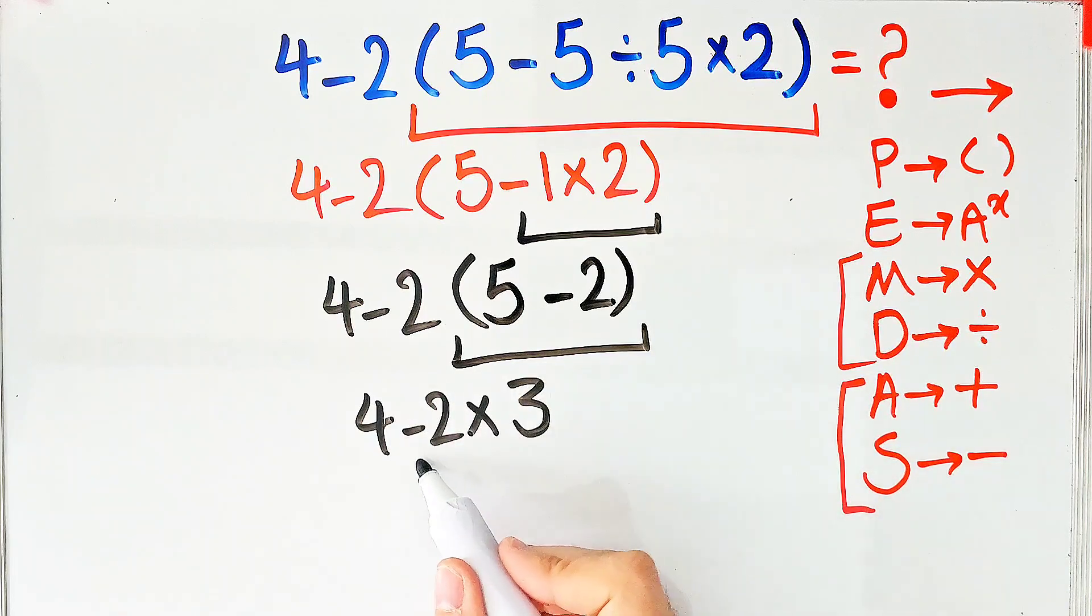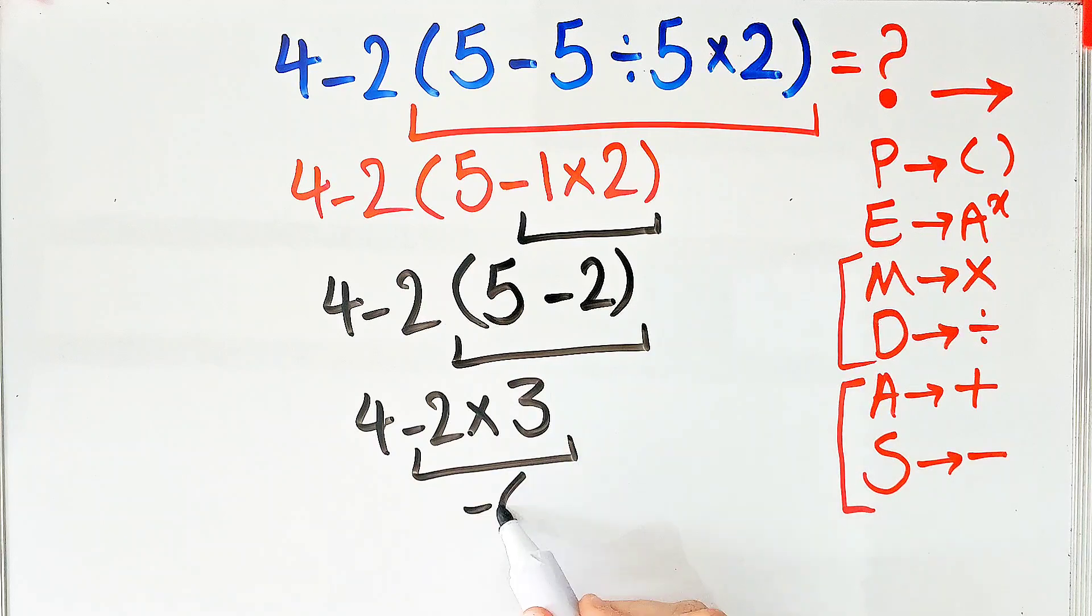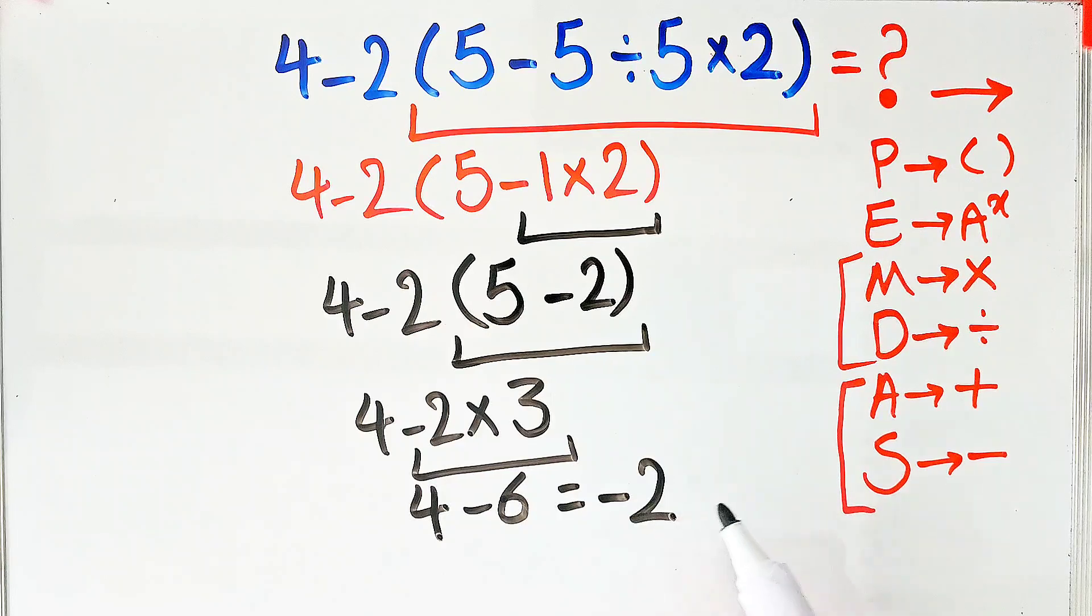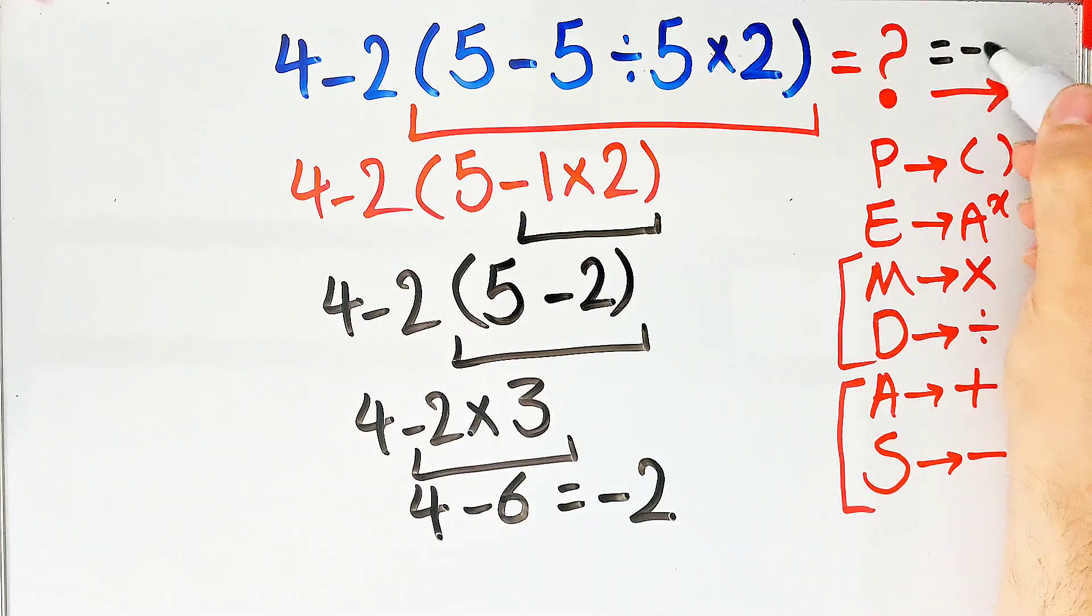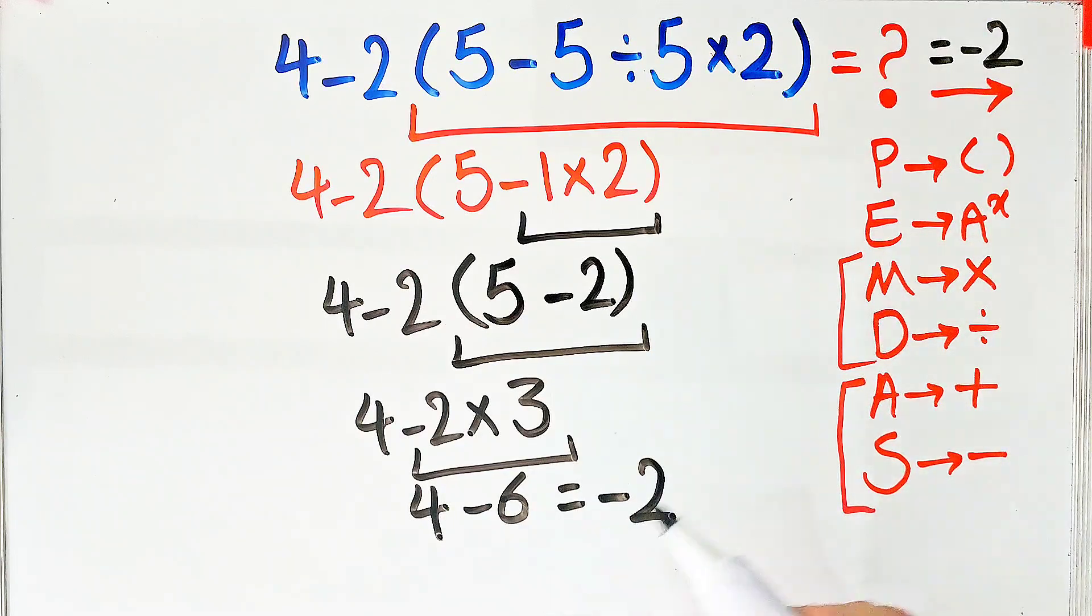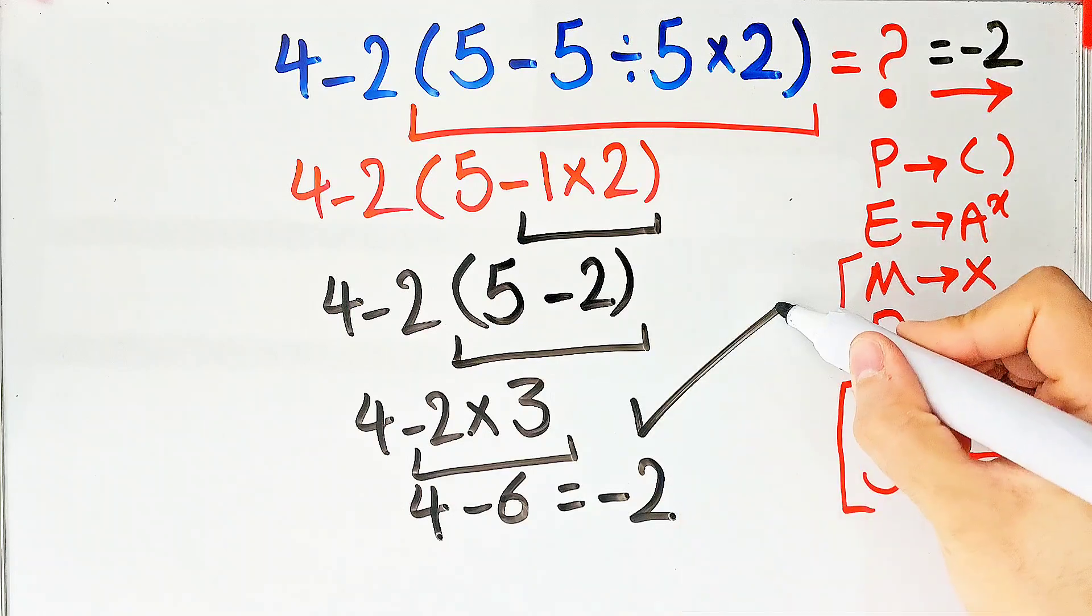2 times 3 equals 6, and 4 minus 6 equals negative 2. The final answer of this question equals negative 2. Thanks for watching guys. Please subscribe to the channel and leave a comment. Goodbye.